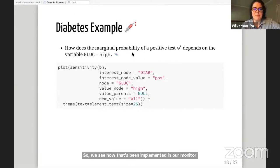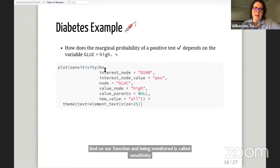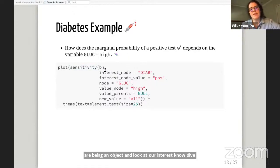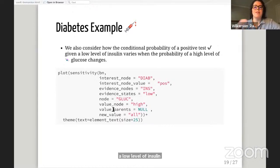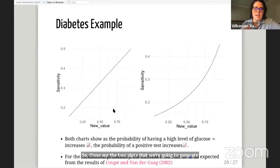First, we look in our diabetes example about how does the marginal probability of a positive test depend on the variable that glucose is high. Our function in bn_monitor is called sensitivity. We call our BN object and look at our interest node diabetes. We want to specifically look at positive diabetes test and high glucose. Then we're going to compare that with what the conditional probability of a positive test is given a low level of insulin. These are the two plots we're going to generate. When we look at them side by side, we see that for both charts, as the probability of having a high level of glucose goes up, the probability of having a positive test for diabetes also increases. For the conditional probability chart on the right, this increase is very nonlinear, and that's what we expect from the results of Coupe and van der Gaag.